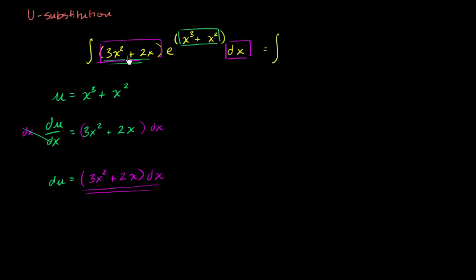I could rewrite this original integral. I could rewrite this as the integral of 3x squared plus 2x times dx times e to the x to the third plus x squared. Now, what's interesting about this? Well, the stuff that I have in magenta here is exactly equal to du. This is exactly equal to du.